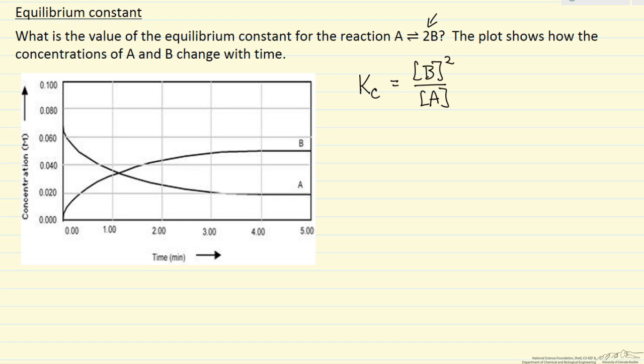We're going to do this in molar units. Since we are given molar units, all we have to do is read off the graph. The concentration of A is 0.020 molar, the concentration of B is 0.05 molar. And so if we make these substitutions,